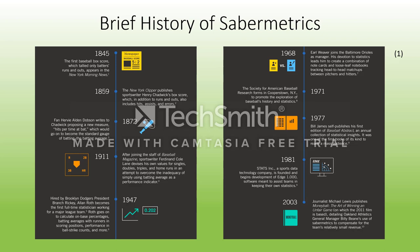Here we see a brief history of Sabermetrics. The last point on the timeline is 2003, when Michael Lewis released his book titled Moneyball, which was when the use of Sabermetrics started to become more widely understood and accepted.